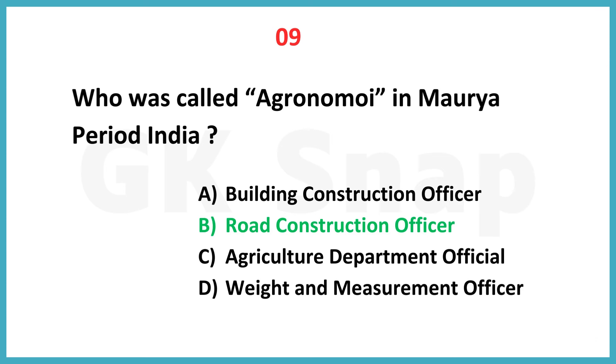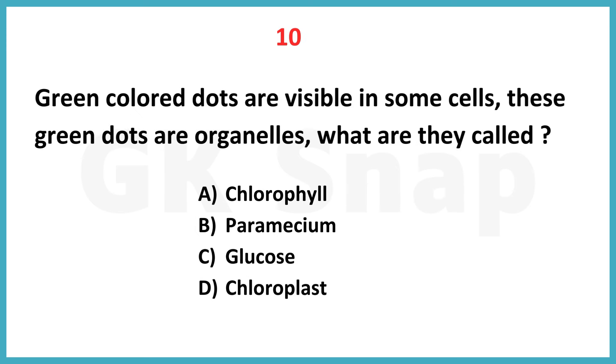Correct answer is option B: Road Construction Officer. Green colored dots are visible in some cells — these green dots are organelles. What are they called?